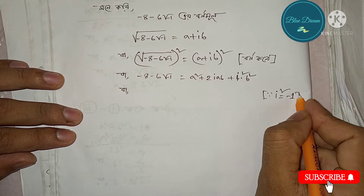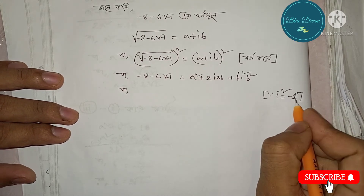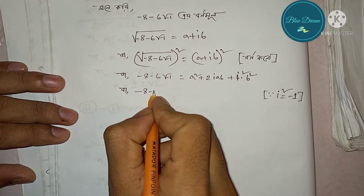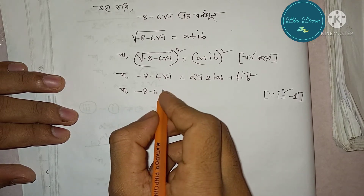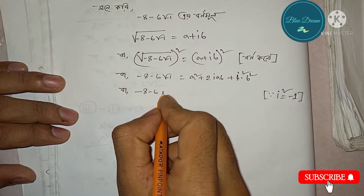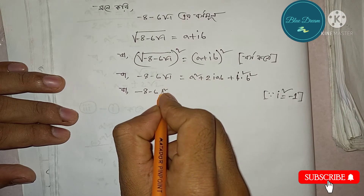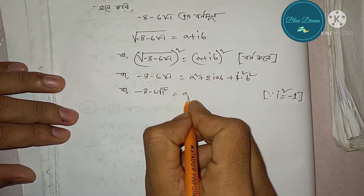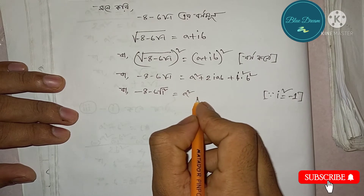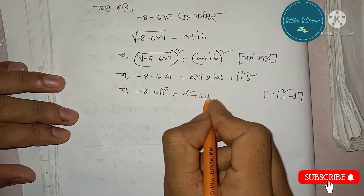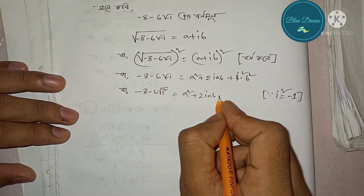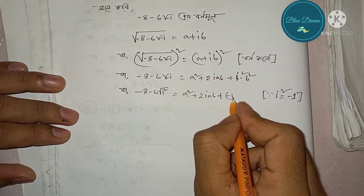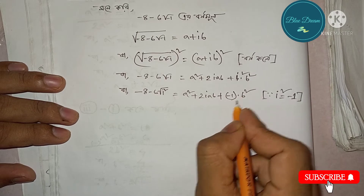Root over minus 1, minus 8, minus 6i. Separating real and imaginary parts: the real part gives a² minus b², and with i² equal to minus 1, we get the imaginary part as 2ab.